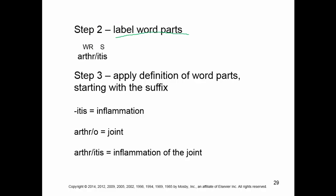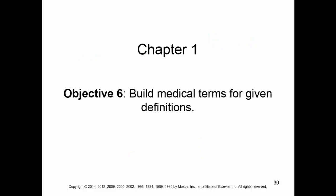Step two is to label the word parts. Your options: WR is word root, S is suffix, P is prefix, and CV is combining vowel. Step three is applying the definition of the word parts starting with the suffix. For example, arthritis is the first word on that list. You start with the suffix: -itis is inflammation. Arth is joint. So you end up with arthritis, which is 'inflammation of the joint.' You put the suffix first the majority of the time, and then the word root, to get 'inflammation of the joint.'